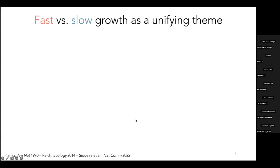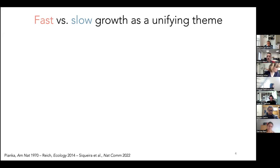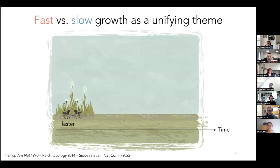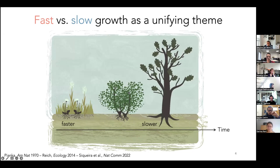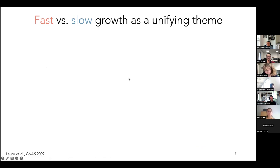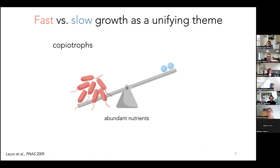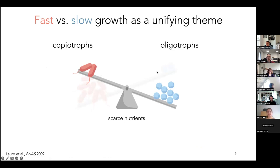In the ecological literature, the concept of fast versus slow growth is a very pervasive theme. For example, plant communities change after disturbance: at first, faster growing grasses colonize a site and are later replaced by slower growing bushes and trees. This is also true for coral communities. For marine bacteria, we see a distinction between fast growing copiotrophs found where nutrients are abundant, and slow growing oligotrophs found where nutrients are scarce.